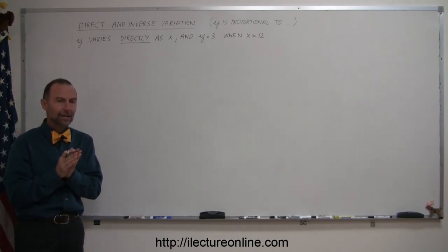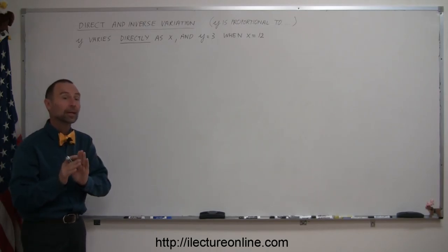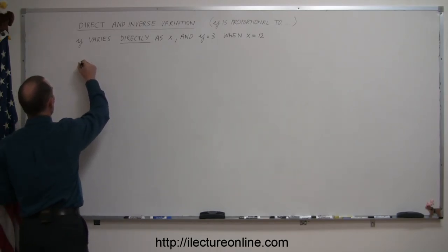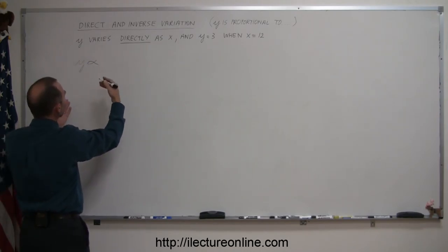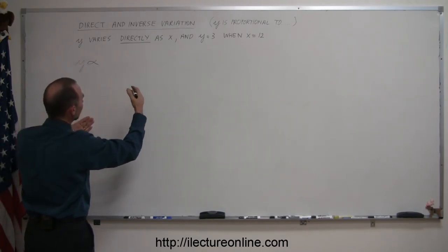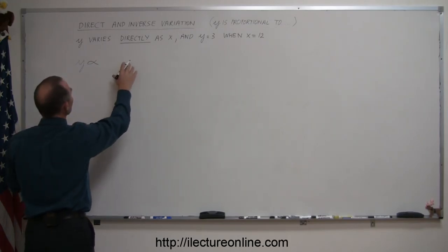And to illustrate what we're talking about here, we have a little example. Here it says y varies directly as x, or you can also say y is directly proportional to x, another way of explaining that. And then they give an information such as when y is equal to 3, x is equal to 12.